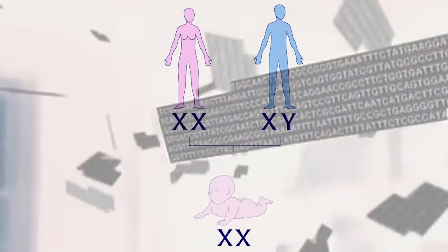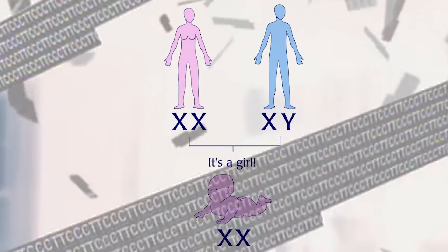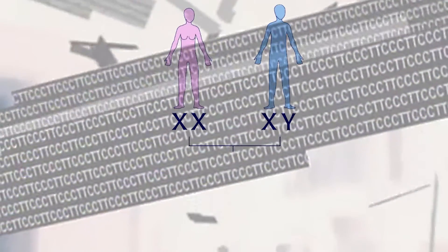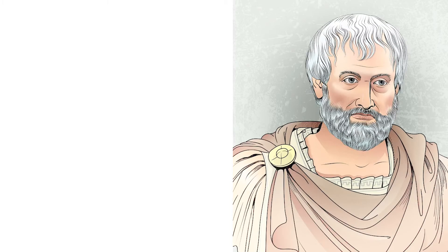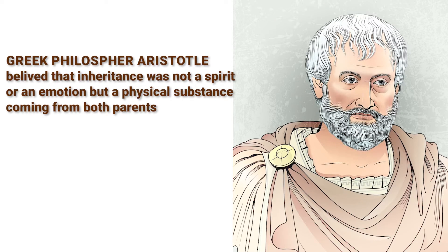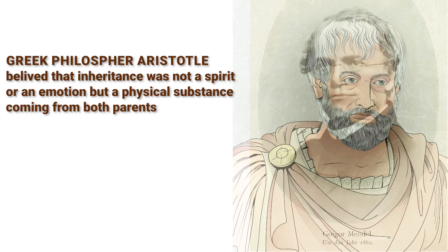However, there was no scientific way to predict the outcome of a cross between two particular parents. Aristotle thought that inheritance was not a spirit or an emotion but a physical substance coming from both parents.